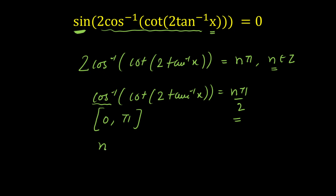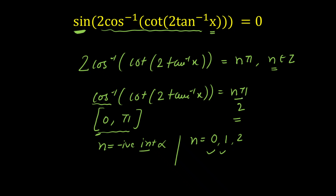Here n is an integer. Negative integers are clearly rejected because the left-hand side is always positive — its range is 0 to π. n=0 is possible since 0 lies in the closed interval. n=1 gives nπ/2 = π/2, which lies within 0 to π, so it's valid. n=2 gives π, which is also valid. n=3 or higher would exceed π, so only three values are possible: n = 0, 1, and 2.